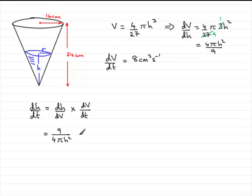And then we're multiplying this by dV/dt, which is 8. And we can simplify this because 4 will go into 8 twice. So we end up with 18/(πh²).